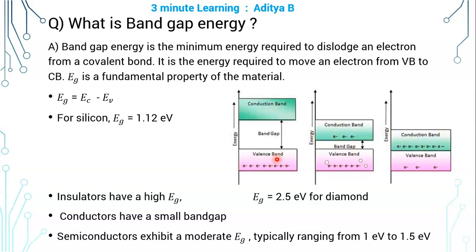There are multiple definitions for band gap energy. Band gap energy EG can be written as the difference in the energies of conduction band and valence band.